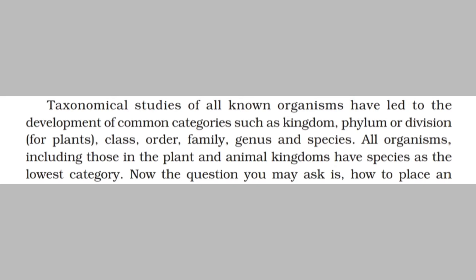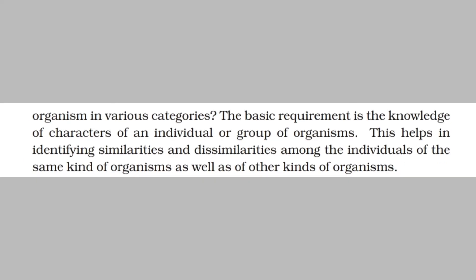All organisms including those in the plant and animal kingdoms have species as their lowest category. The question arises: how to place an organism in the categories? The basic requirement is the knowledge of characters of an individual or group of organisms. This helps in identifying similarities and dissimilarities among individuals of the same kind of organism as well as of other kinds.